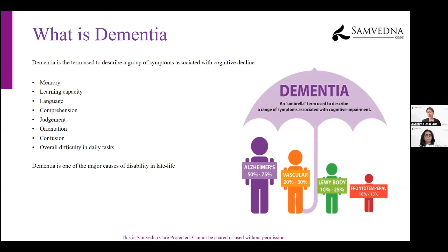In dementia, we often see changes in memory — people begin to forget more often. People have challenges in learning new information. Even in later stages, something like following a conversation, or following a television serial they may have been watching for many years, becomes very difficult. That might be due to difficulty with comprehension.